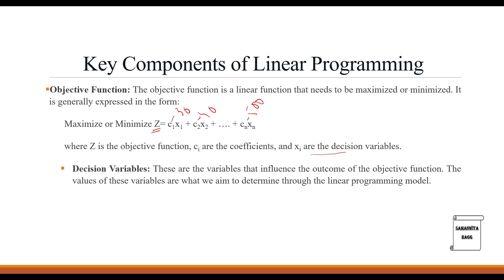Decision variables are the variables that influence the outcome of the objective function — their values are what we aim to determine through the linear programming model. Whatever technique you use in linear programming, you want to find the values of X1, X2, up to Xn, substitute those values into the objective function, and find the value of Z. For a maximization problem, you find Z at its maximum; for a minimization problem, you find X1, X2, X3 and determine Z at its minimum value.